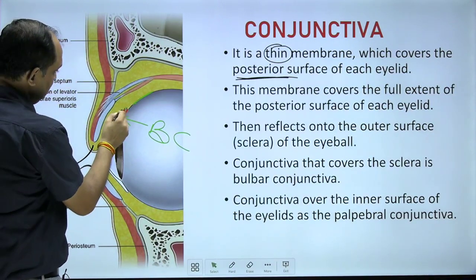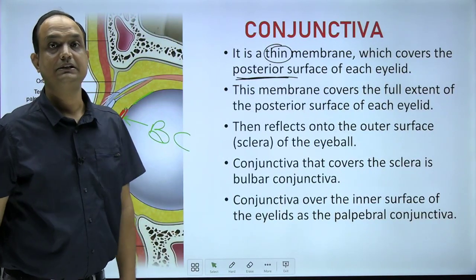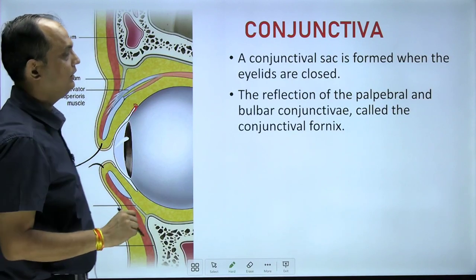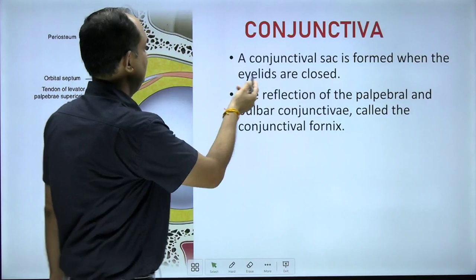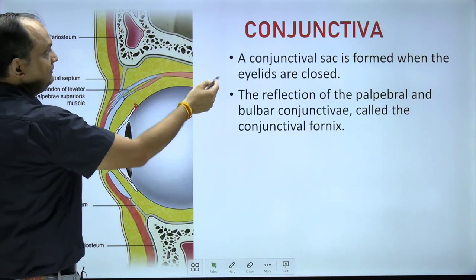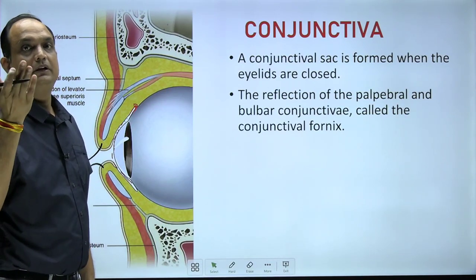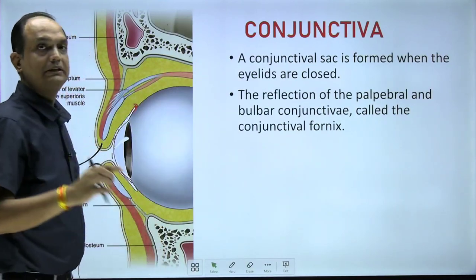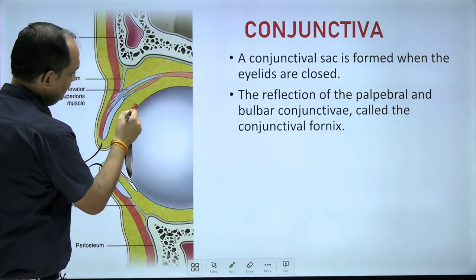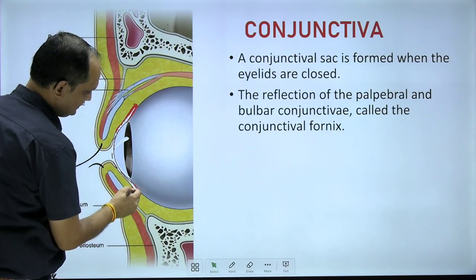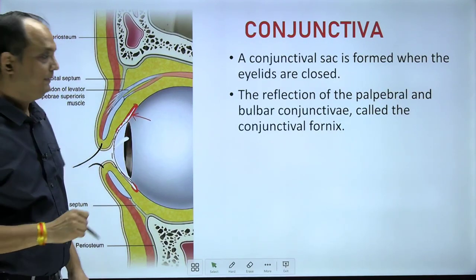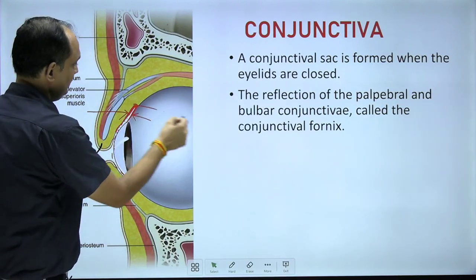The bulbar conjunctiva covers the eyeball while the palpebral conjunctiva covers the inner side of the eyelid. The point where they meet is known as the conjunctival fornix. The conjunctival sac is the space formed between the anterior surface of the eyeball and the inner side of the eyelid when the eyelids are closed. The reflections of palpebral and bulbar conjunctiva on the superior and inferior sides are known as the fornices.